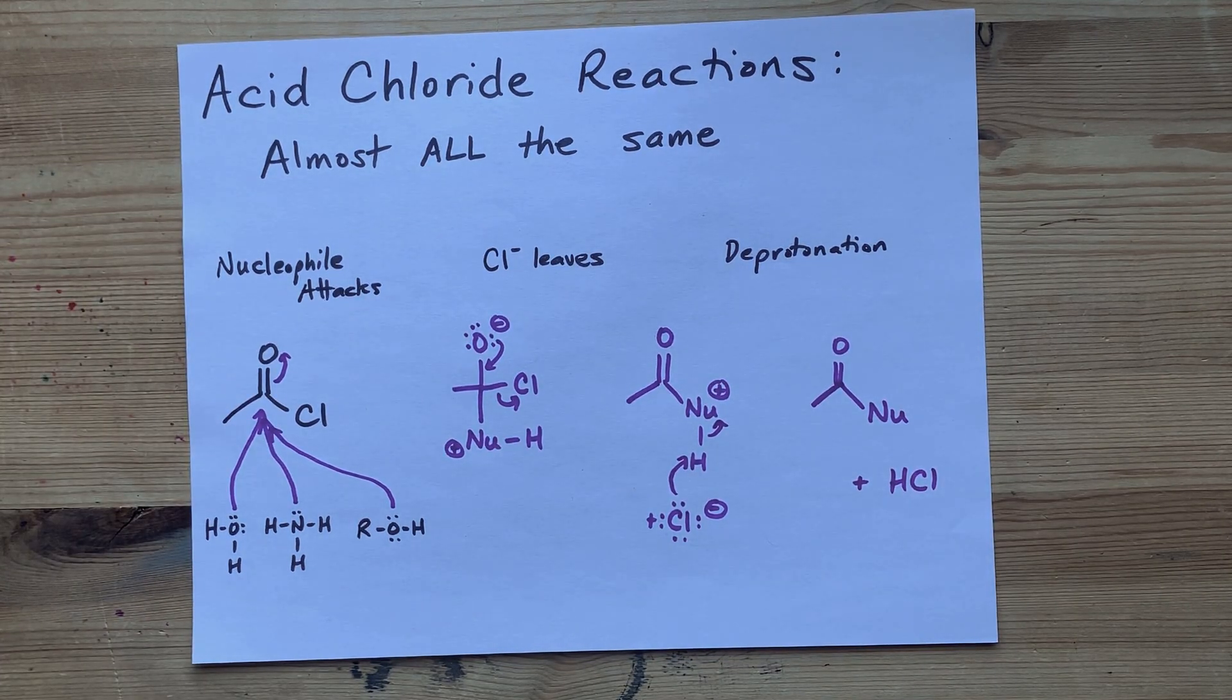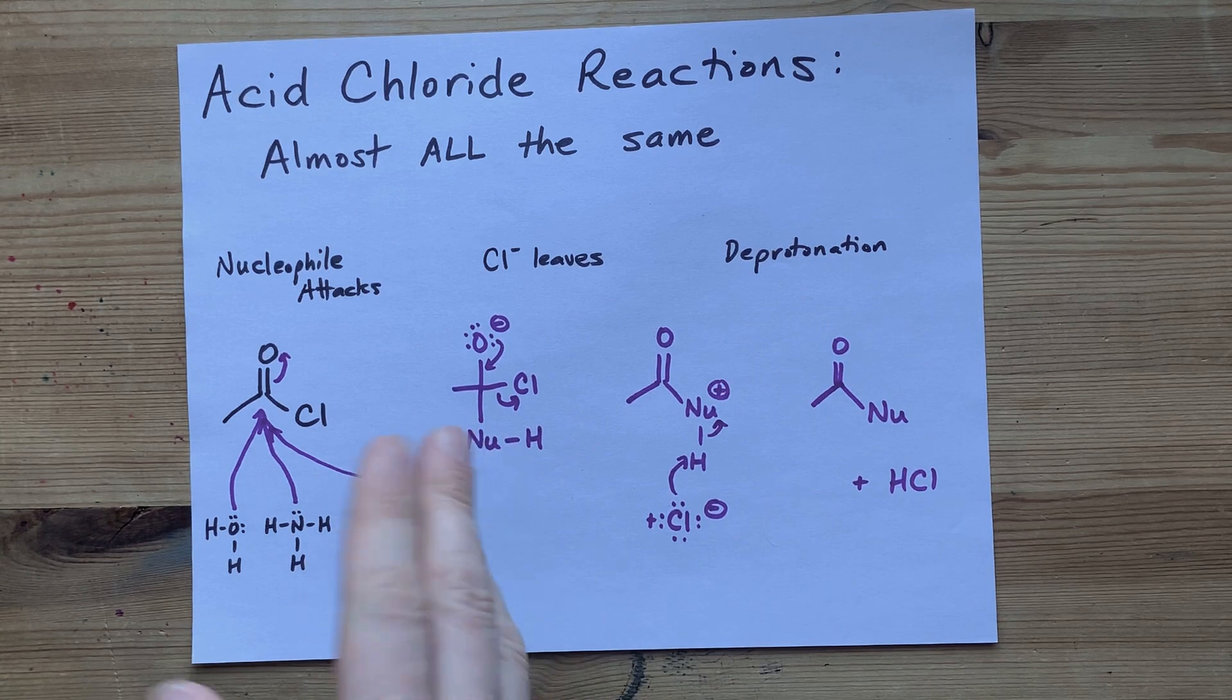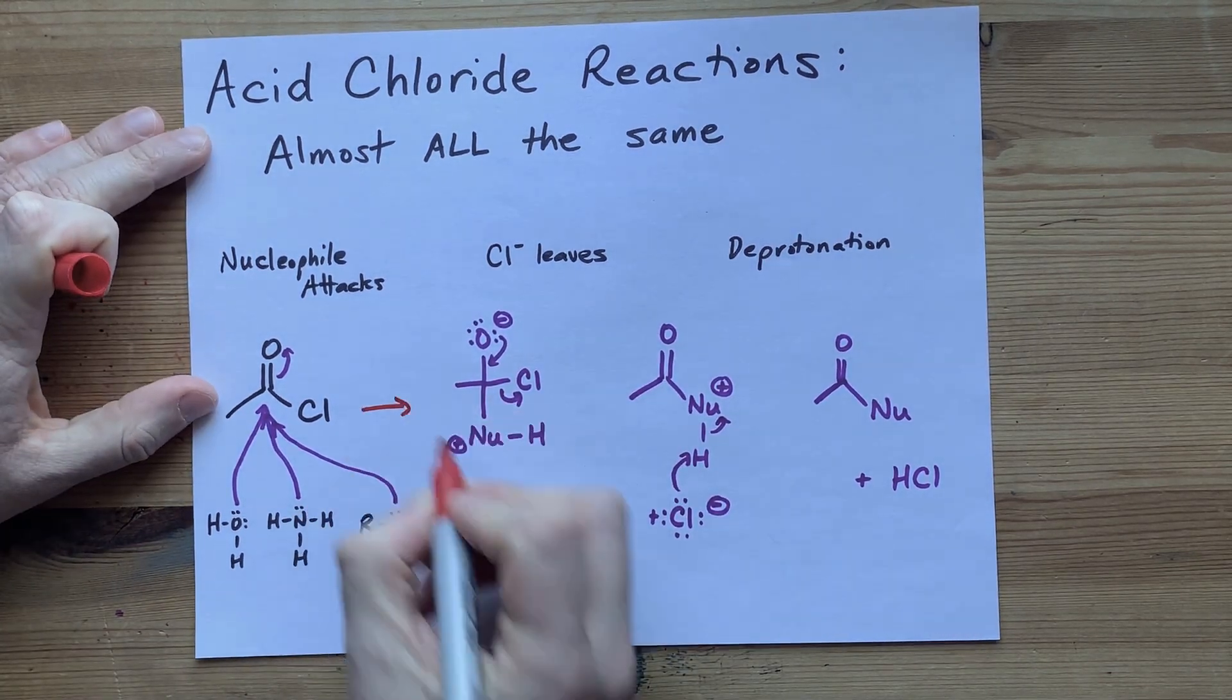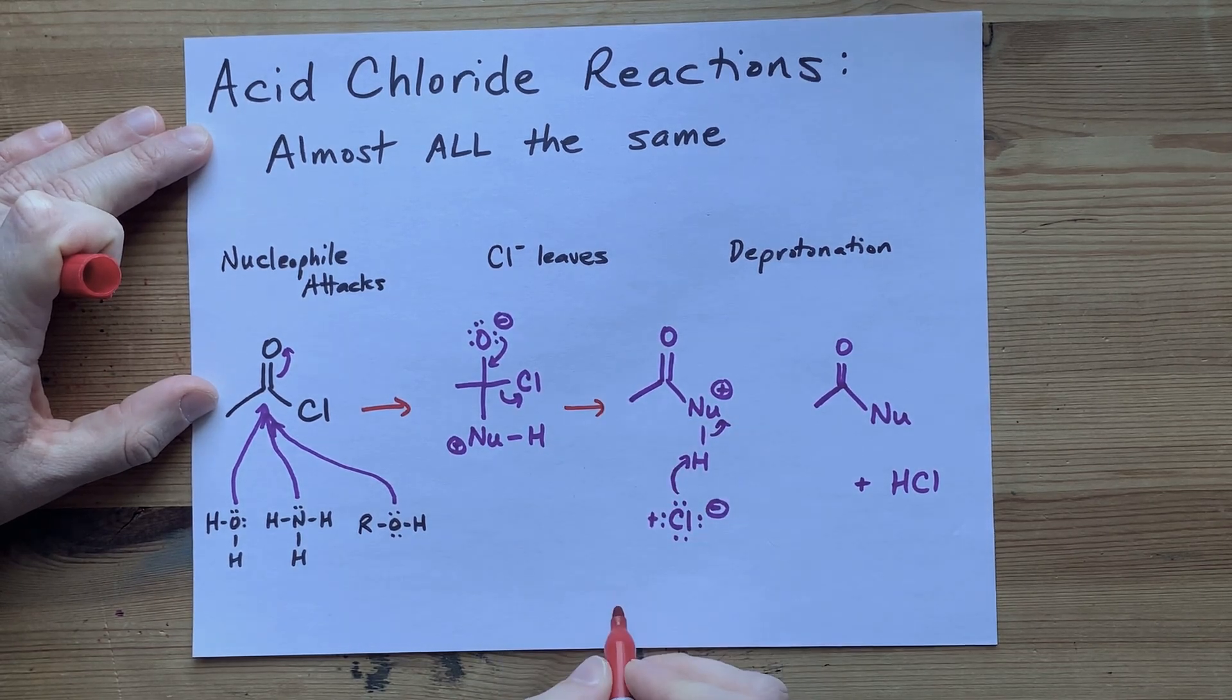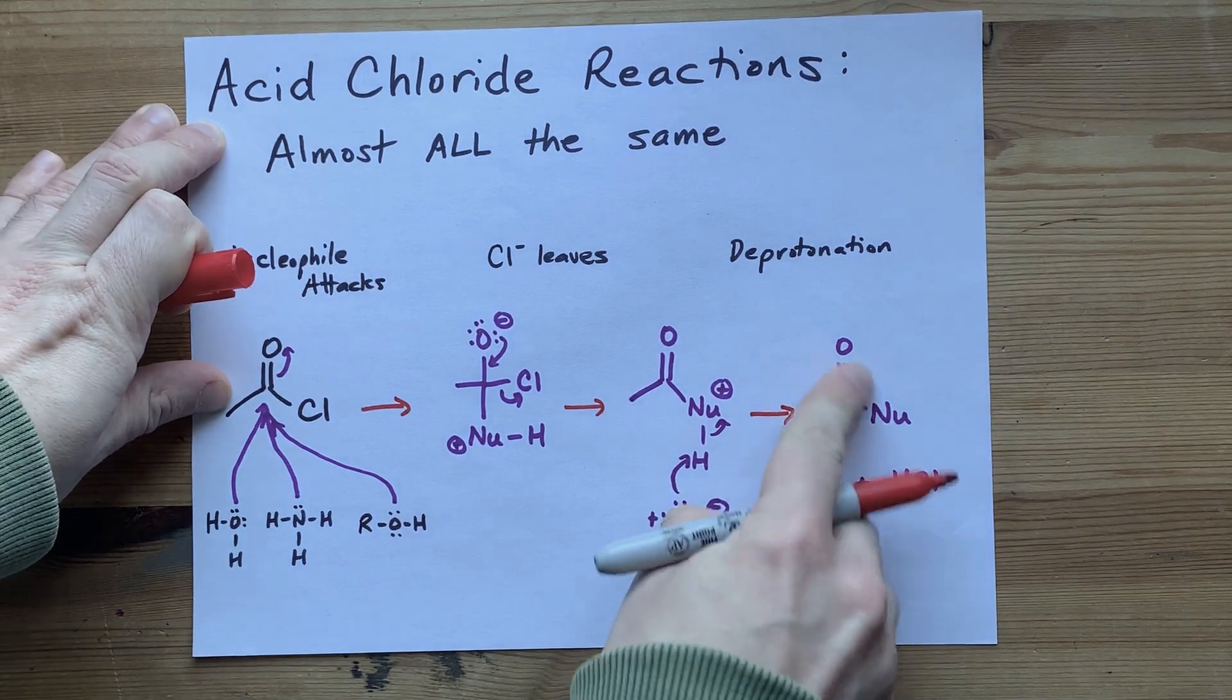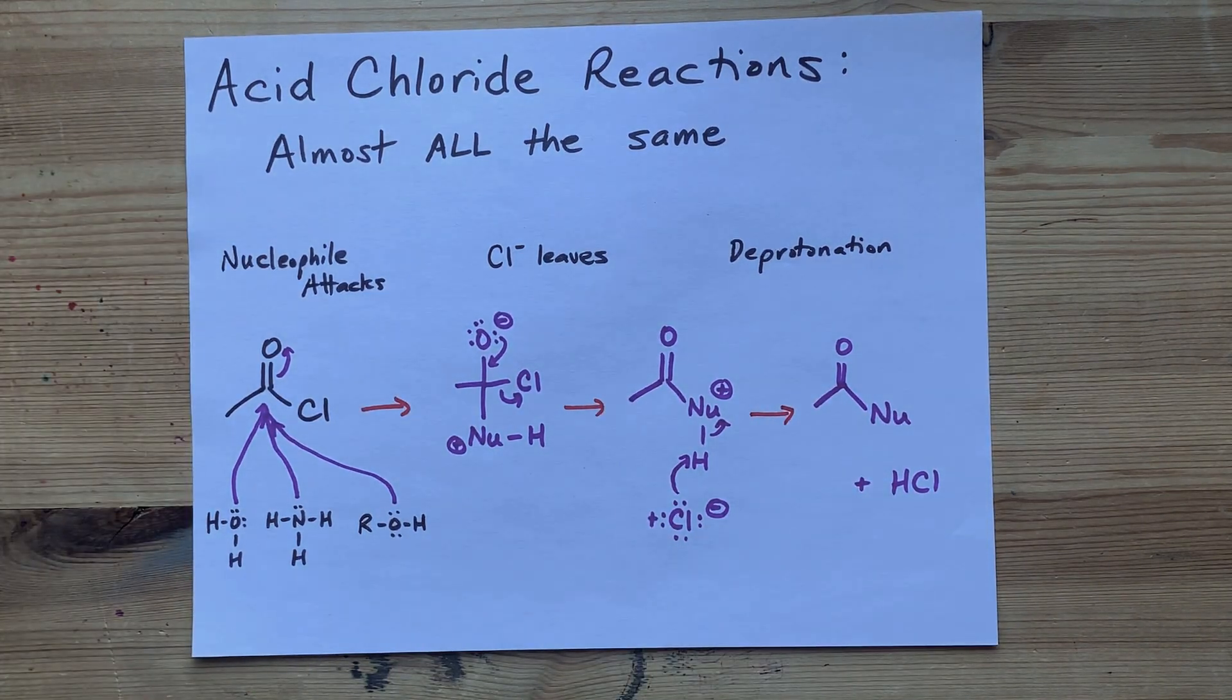This is the generic mechanism that works whenever you're reacting almost anything with an acid chloride. Nucleophilic attack, the chloride leaves, and then the chloride helps to deprotonate the nucleophile and create a neutral, stable molecule for you.